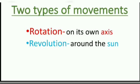There are two types of movements of our earth: rotation, which is on its own axis, and revolution, which is around the sun.